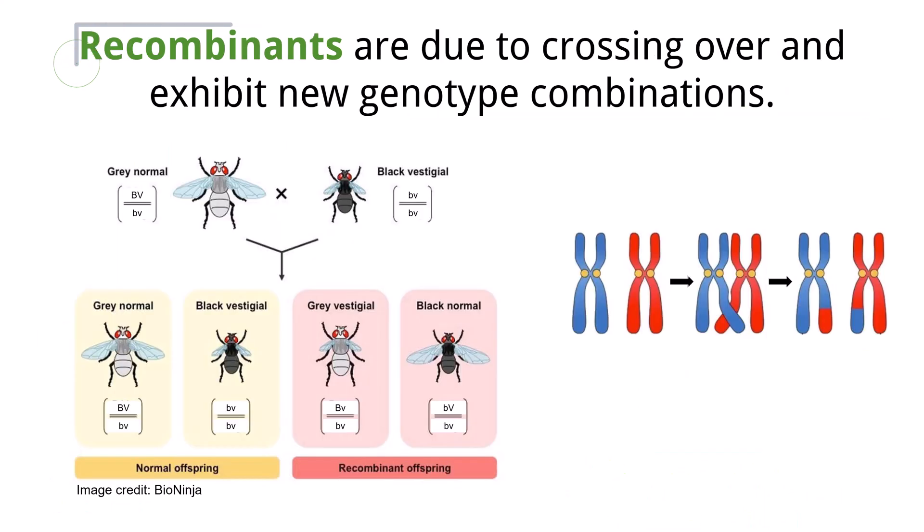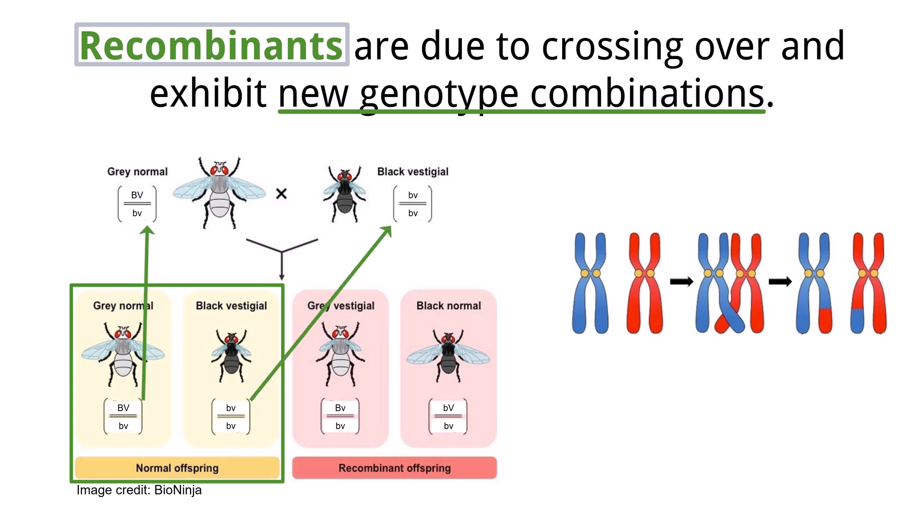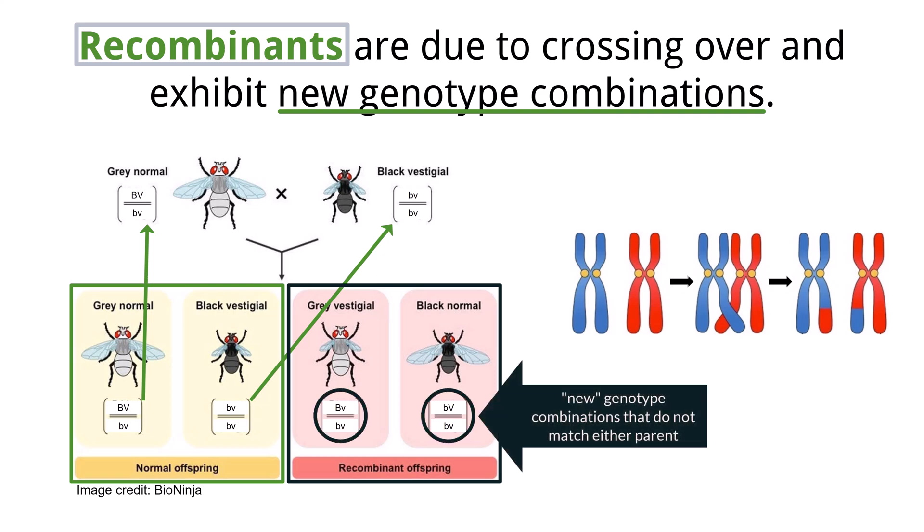Recombinants are produced during crossing over in meiosis and are defined as offspring which possess new combinations of genes that are not found in the parent generation. Looking at the image here, you can see two offspring on the left, highlighted in yellow, are identical to one of the parent flies, while the two offspring on the right, highlighted in pink, do not match either of the parent's genotypes.